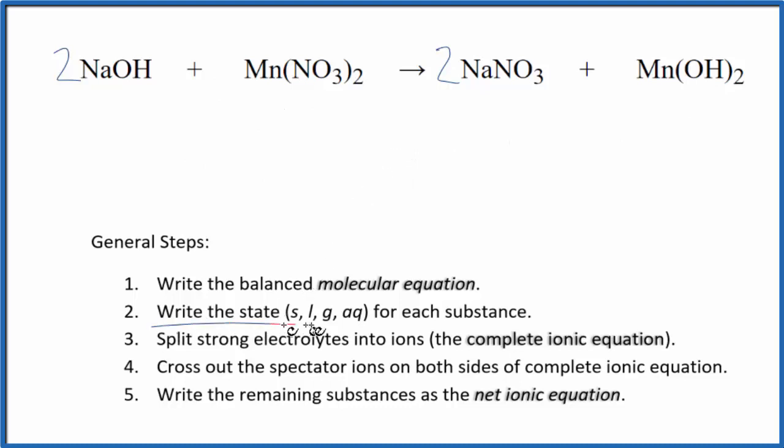Now we can write the states for each substance. Sodium hydroxide, that is a strong base, a strong electrolyte. It's going to split apart into its ions. Aqueous nitrates are very soluble. And then here we have sodium nitrate, that's going to be soluble. Then the manganese hydroxide - hydroxides of these transition metals are often insoluble or slightly soluble. So because we're going to count this as insoluble, that means it's going to be a solid.